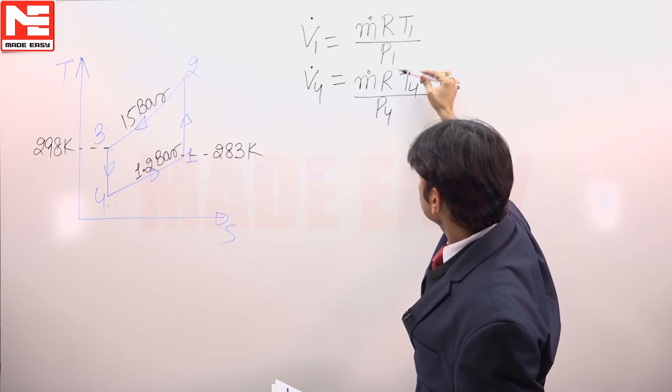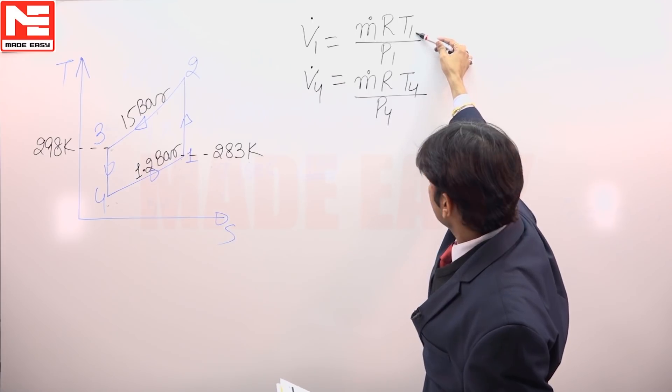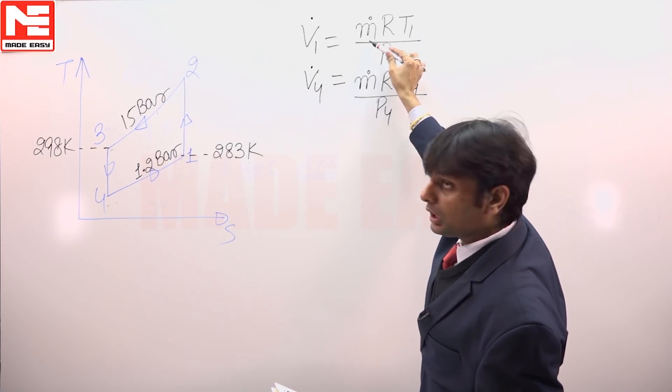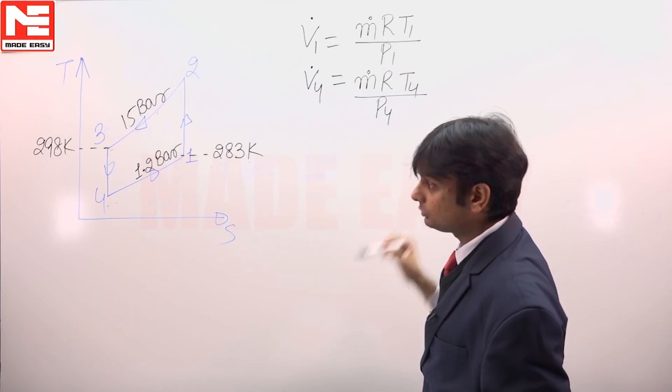The value of R is known, the value of P1 and P4 is given, and the value of T1 is given. The unknown factors are mass flow rate first and second factor is T4.